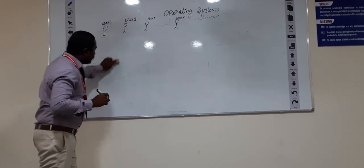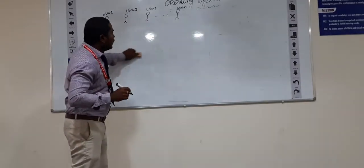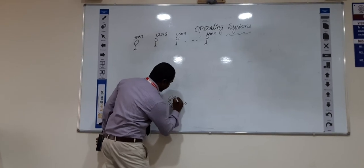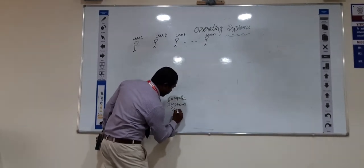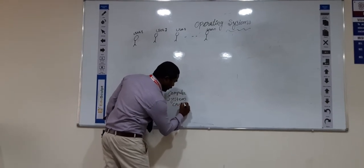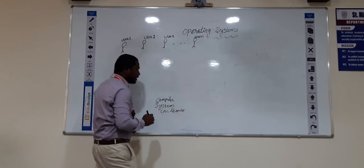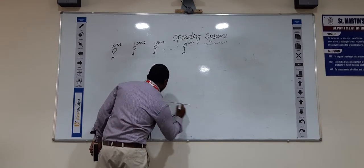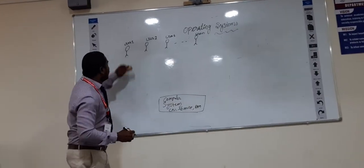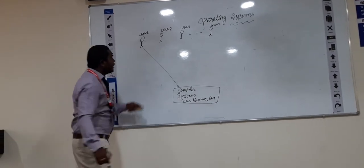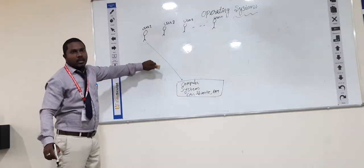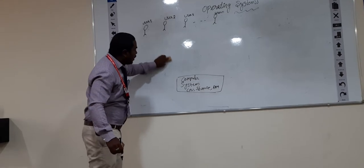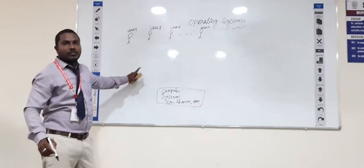Users want to communicate with the computer system and do some work on it. The computer system has CPU, I/O devices, RAM, and storage devices — these are the hardware components. A user wants to interact with the computer system directly, but it is not possible, or at least it is a very difficult process to communicate directly with hardware components. So it will be easier if the user installs system software — that is, the operating system.